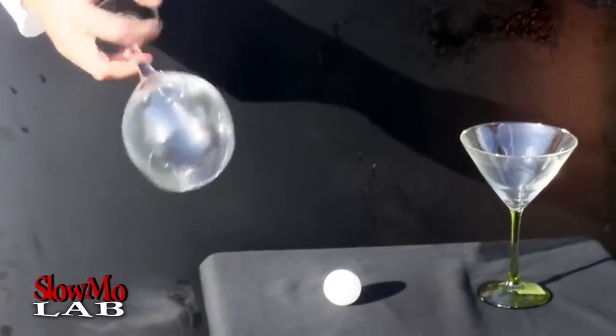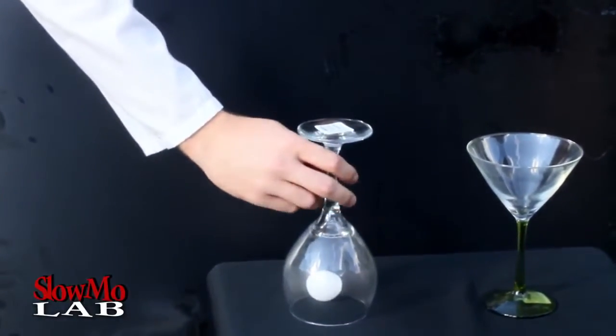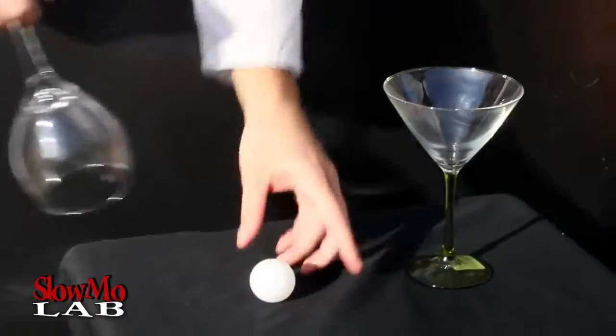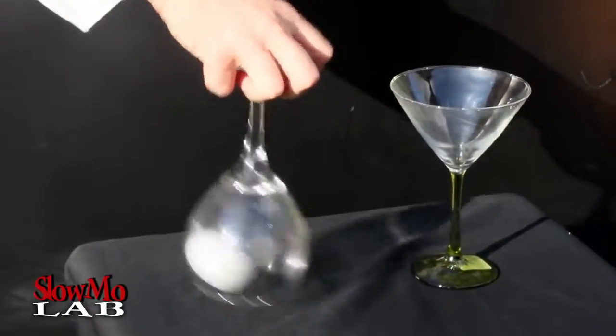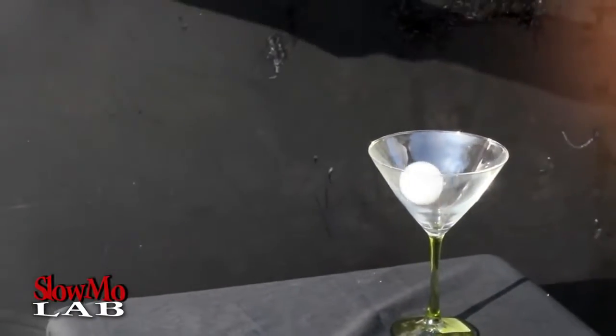So the way we're gonna demonstrate it is very simple. We're just gonna practice on a ping pong ball first. We're gonna cover it with a wine glass and we're gonna start spinning. Didn't work, spin it faster. We're first gonna practice with a ping pong ball, start spinning it and then we're gonna stop and it'll drop. Did you see how cool it was?